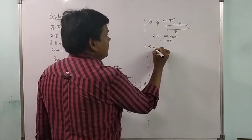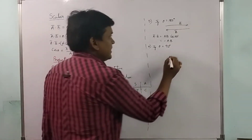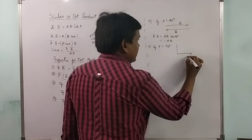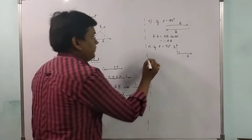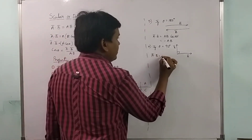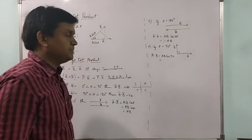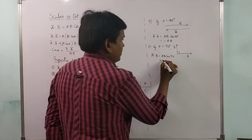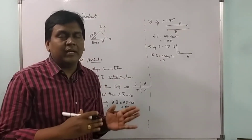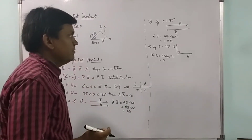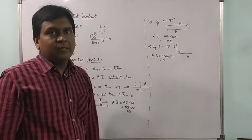If theta equals 90 degrees — consider a-bar and b-bar making an angle of 90 degrees — then a-bar dot b-bar equals a·b·cos(90) equals a·b·0 equals 0. So a-bar dot b-bar will be zero when the two vectors are perpendicular to each other.